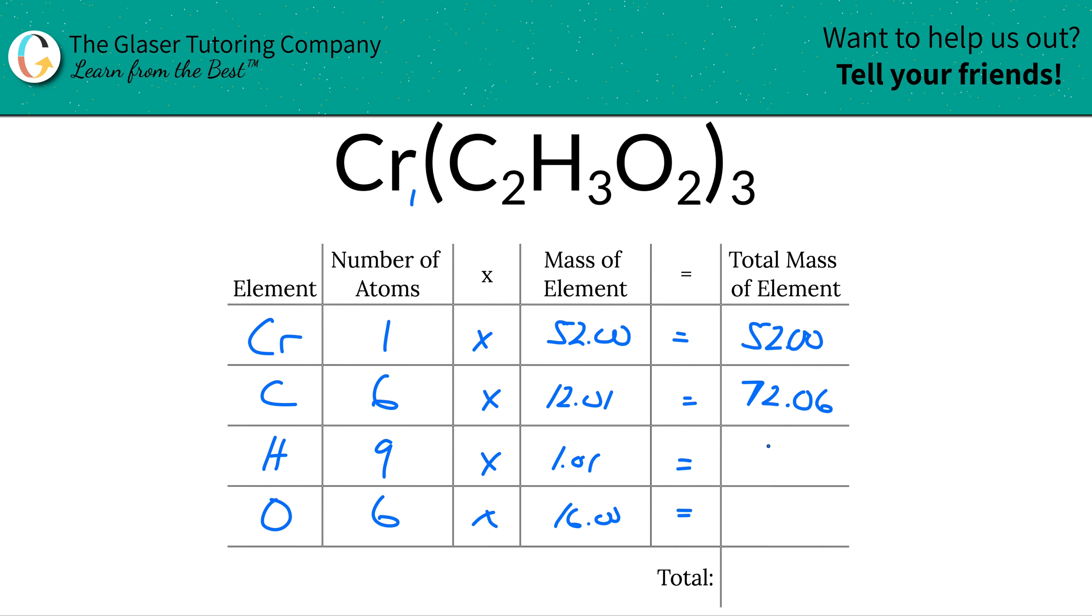Then for hydrogen, same thing, multiply it across. That's 9.09, and then oxygen, again, 96.